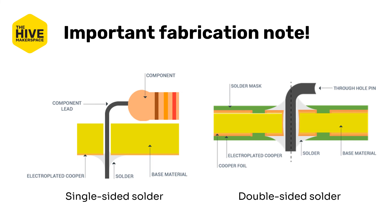One last important note about fabrication that you should keep in mind while designing is the idea of where components sit relative to where the traces are, and how the component will actually connect to those traces. Surface mounted components, for example, require vias to connect between layers, but not necessarily to connect to traces on the same side of the board.